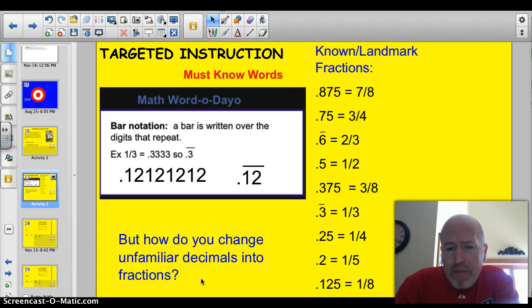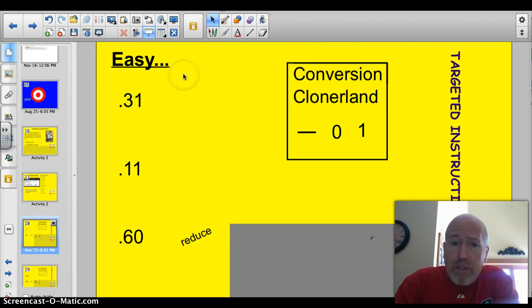But how do you change unfamiliar fractions into decimals? For instance, 0.12. How would you change that into a fraction? Well, it's actually very easy. You just need to visit Conversion Cloner Land. It's a new decimal theme park where all the math students hang out. Okay, don't show your parents that part. They might pull you out of my math class.